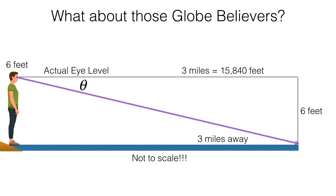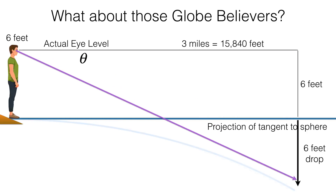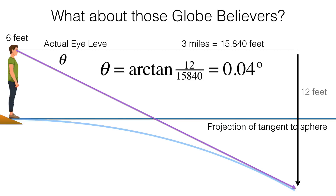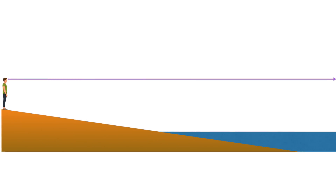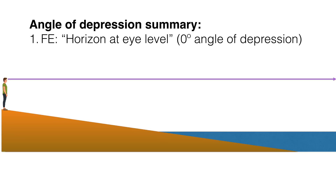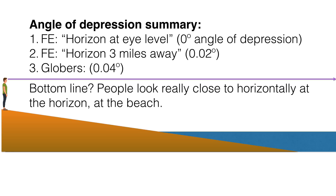What about globe believers? They don't believe the earth is flat, so this triangle is not good enough because we have curvature drop. The curvature drop is measured from a line tangent to the sphere. You take the line the guy's standing on as the tangent line, then drop six feet from that, which means a total drop from eye level of 12 feet. If we run the numbers, we get four hundredths of a degree. Again, this purple line is going to look horizontal - essentially horizontal. So for the entire rest of this video, we're going to assume that this line is indistinguishable from horizontal, even though it's actually looking down slightly.